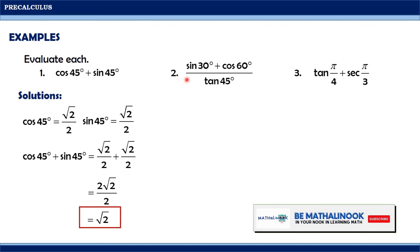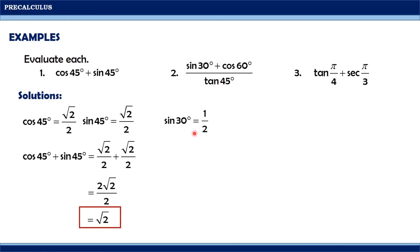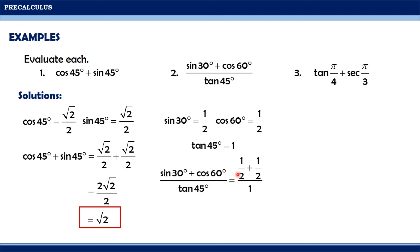For the second example, we have (sine 30° plus cosine 60°) all over tangent 45°. Sine 30° equals 1/2, cosine 60° equals 1/2, and tangent 45° equals 1. By substitution, we get (1/2 + 1/2) over 1. One-half plus one-half equals 1, divided by 1, so the expression equals 1.